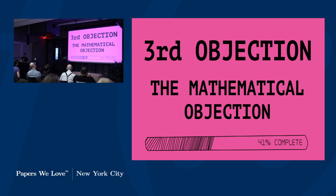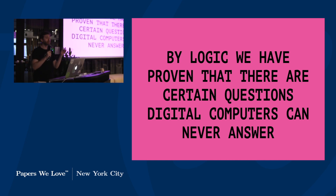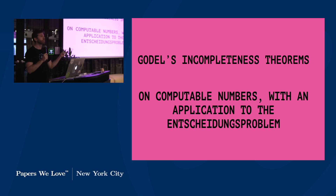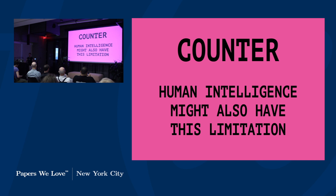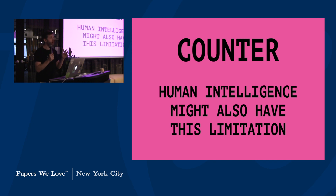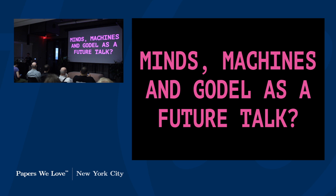The third, more interesting objection is the mathematical objection: by logic, we have already proven there are certain questions that logical systems cannot answer, as shown in Gödel's incompleteness theorem and Turing's own paper on computable numbers with an application to the Entscheidungsproblem. His counter is that human intelligence might also have this limitation, and also that you would need to know the inner workings of the machine so well for it to even show up that in daily conversation it wouldn't matter.